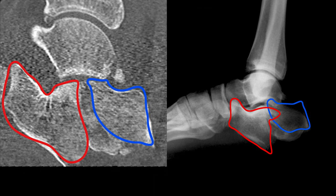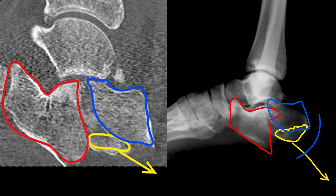The first reduction maneuver will be disimpacting and descending the yellow fragment, which is stuck between the red and blue fragments. Then the tongue fragment should be reduced by rotating it around the horizontal axis and moving it from lateral to medial.